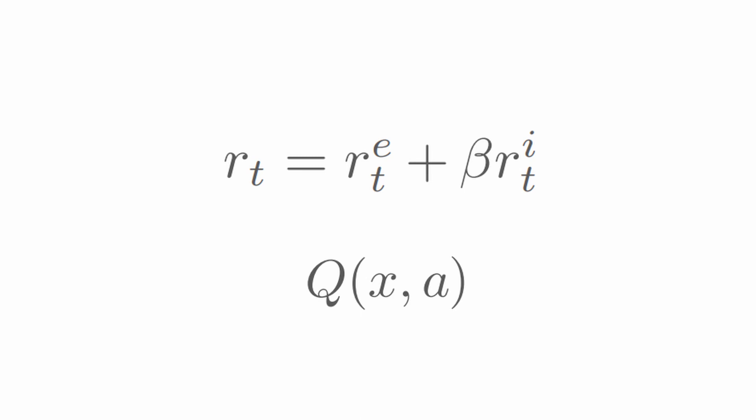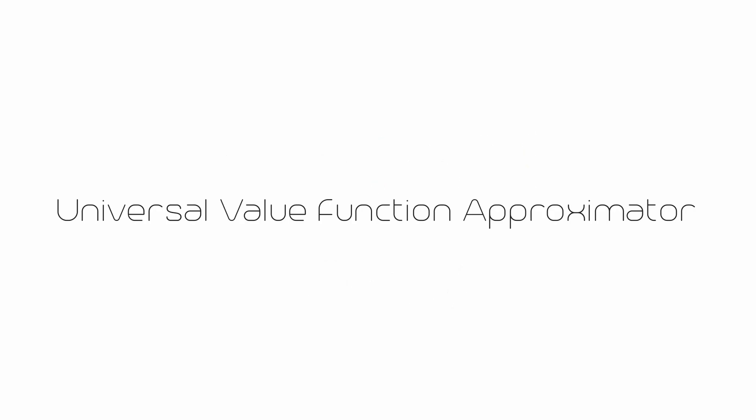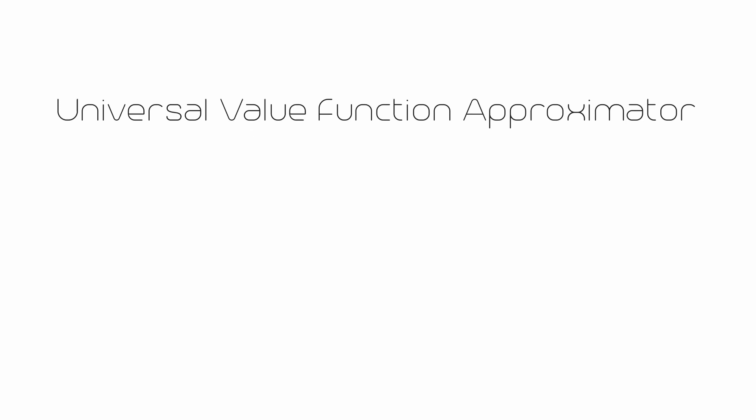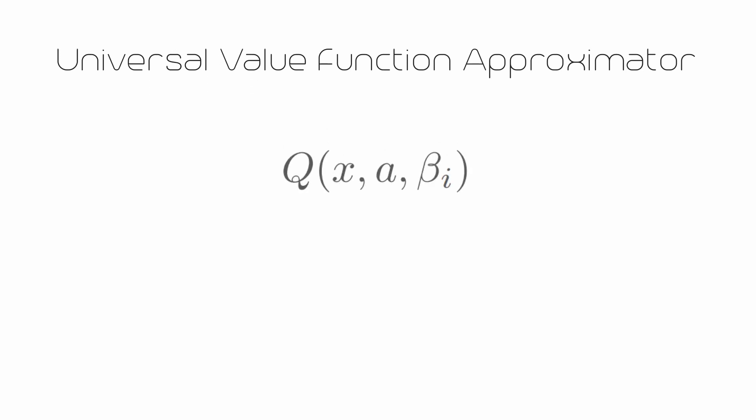So what Never Give Up proposes is to use a universal value function approximator called UVFA to simultaneously approximate the value or action-value function with respect to a family of augmented rewards by conditioning the action-value function also on the beta value.